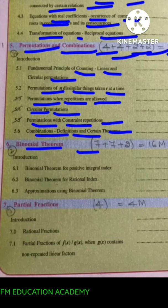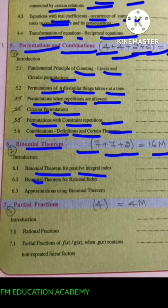Chapter 6, binomial theorem, which will have 7, 7 and 2 mark questions, that is, total 16 marks will come from this chapter. Binomial theorem for positive integral index, binomial theorem for rational index, approximations using binomial theorem.